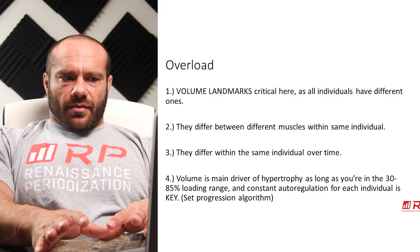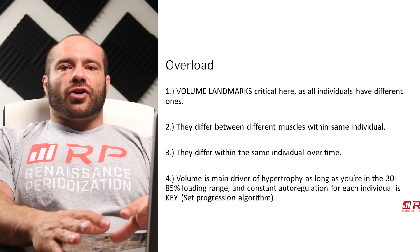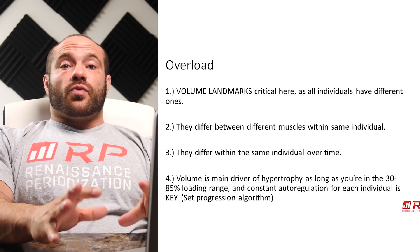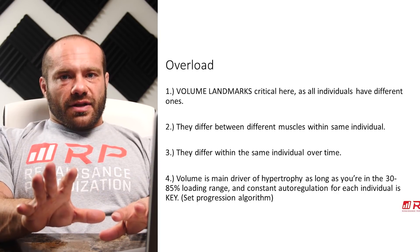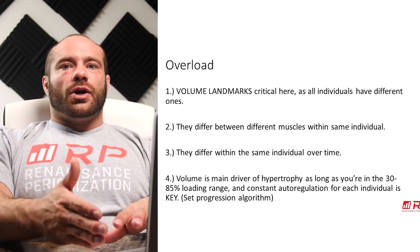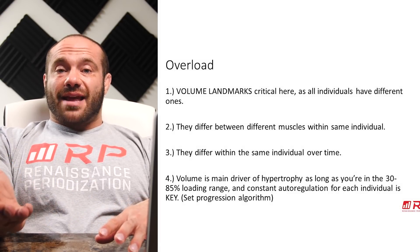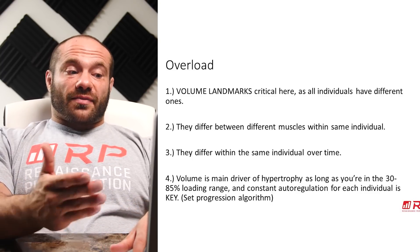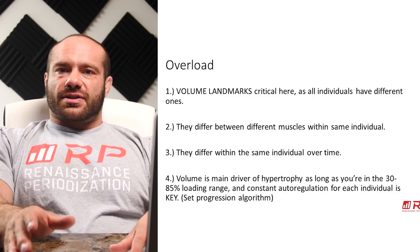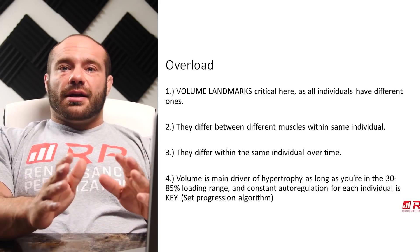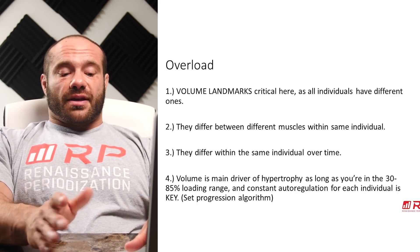As long as you're in the 30 to 85 percent one-rep-max range, volume is the main driver of hypertrophy. So there has to be a lot of volume auto-regulation to accommodate these overload differences. If you apply a certain volume and individuals are not getting a ton of stimulus or fatigue, you can probably do more. If they are getting a ton of stimulus and a lot of fatigue, probably doing the same or even less is a good idea. Only through auto-regulation — something like the set progression algorithm from earlier lectures — will you be able to identify these huge individual differences. There's no guarantee that what's overloading for one person is going to be overloading for another, or what was overloading for someone earlier will be overloading for them again later.